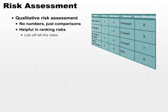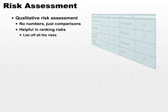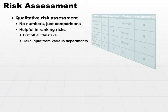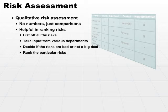Basically, what you do is list off all the risks, take input from various departments, decide which one is the worst, which one is not a big deal, and then you rank the particular risks. Again, there's no numbers — it's very qualitative. Everybody throws in their two cents worth, and you decide what the most obvious risks or the worst risks are for your organization.